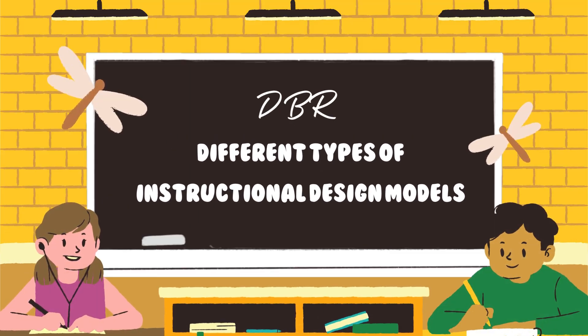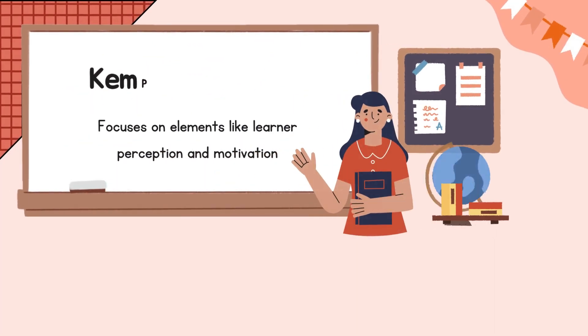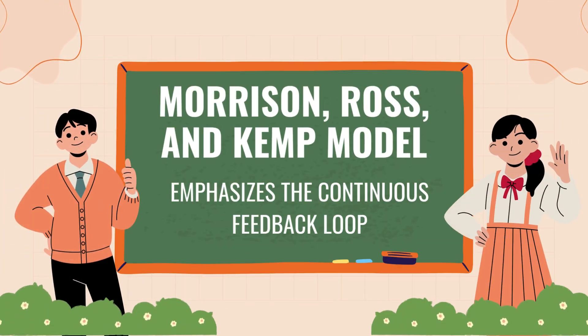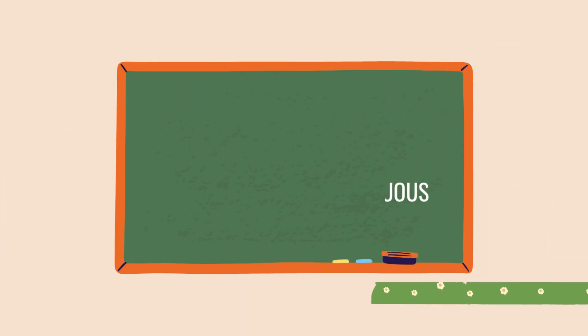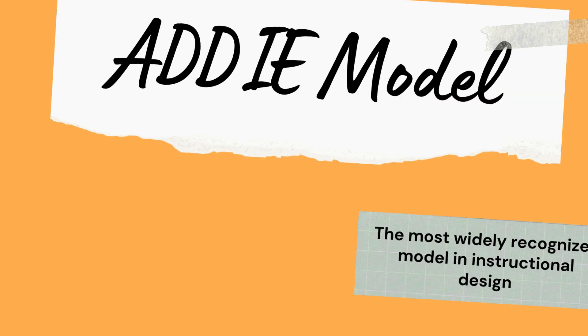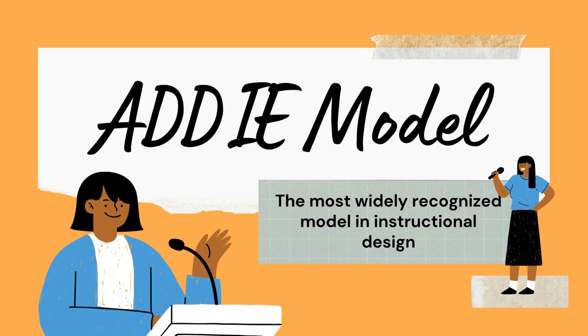Instructional design involves systematic processes to create effective educational experiences, often enhanced by technology. There are several models, such as the Kemp design model, which focuses on elements like learner perception and motivation; the Morrison, Ross, and Kemp model, which emphasizes the continuous feedback loop; and the ASSURE model, which incorporates technology and media with a focus on learner characteristics. However, the most widely recognized model in instructional design is the ADDIE model, which I'll focus on from here.